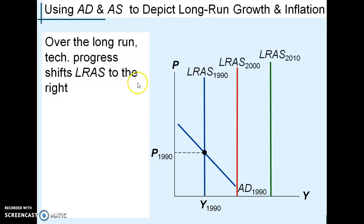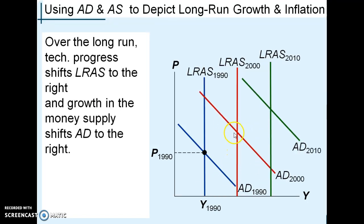Two things are going on here. First, the long-run aggregate supply curve is continually shifting to the right because of new technologies, more machinery, and more human capital. At the same time, the central bank prints money, and as they print money, overall price levels tend to grow. If aggregate demand and supply come together to determine your price level, and they print money faster than the economy grows, there are more dollars per item and price levels have to rise. This explains the economic growth we see in the United States — the supply curve shifting right — along with overall higher price levels year after year.